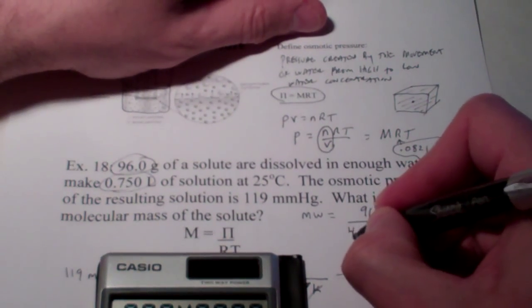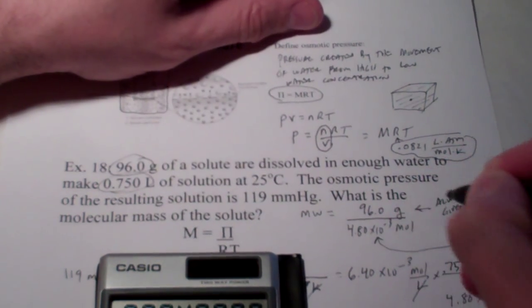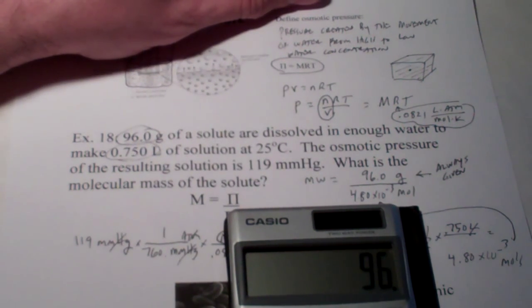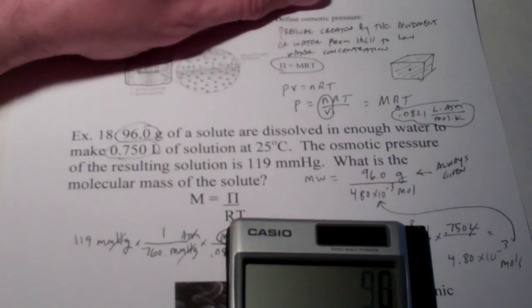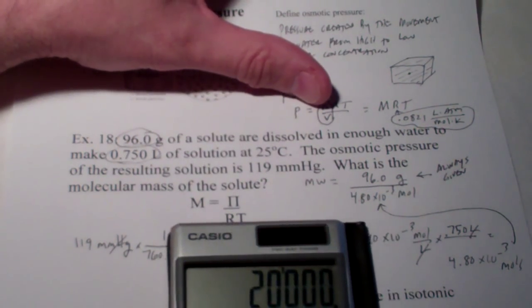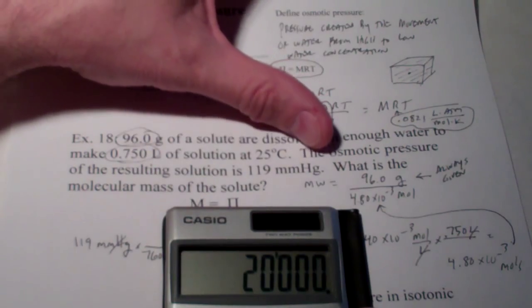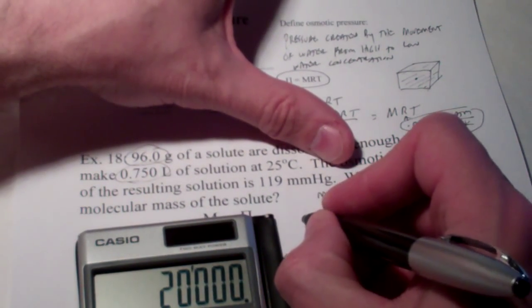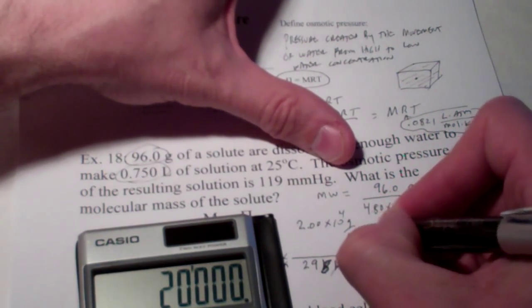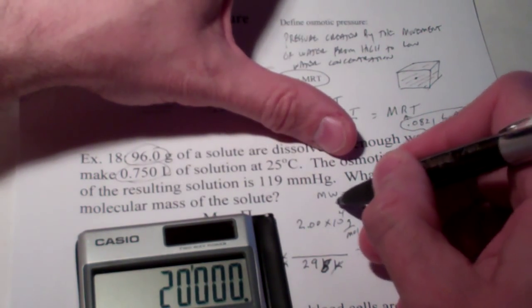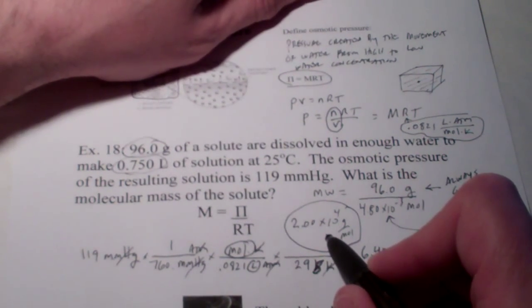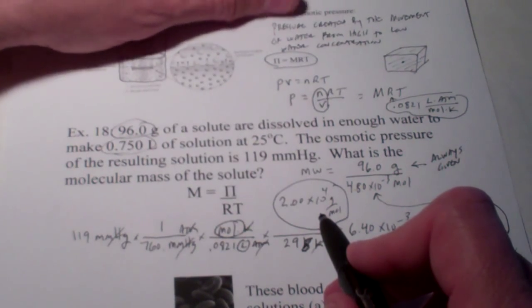So, let's give this a whirl. Well, we have 4.80 times 10 to the negative third moles. So, let's plug and chug and see what we get here. We have 96.0 divided by 0.00480. And, we end up with, holy cow, 20,000. Now, if we round that off to 3 sig figs, which is what we're allowed, we end up with 2.00 times 10 to the fourth grams per mole. So, that's 20,000 grams per mole. And, just as I said, that's a pretty doggone big molecular weight. That's not unusual when you do osmotic pressure problems.